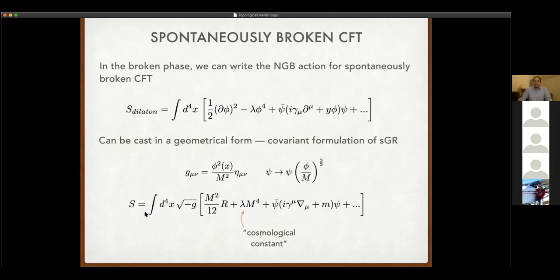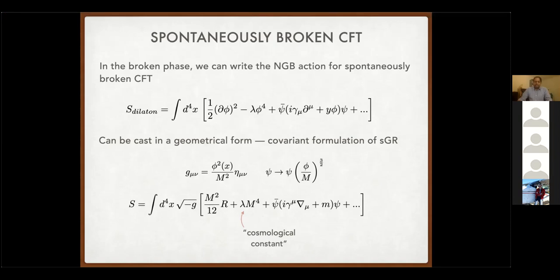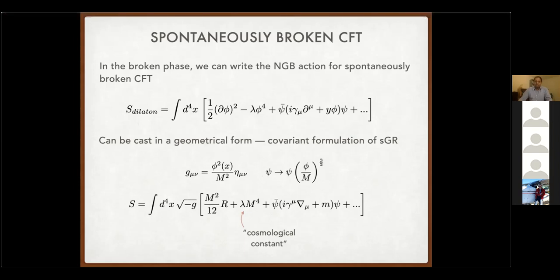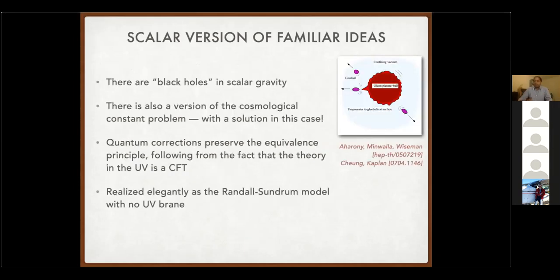If you wanted to study this theory around a flat background you would set the cosmological constant to zero — in the spontaneously broken phase this would be zero — but from the low energy point of view it's allowed. This is in fact like the first theory of gravity that Nordström wrote down: the scalar theory of gravity. The fact that it's a dilaton is precisely the reason you can convert this scalar action into a geometrical-looking action.